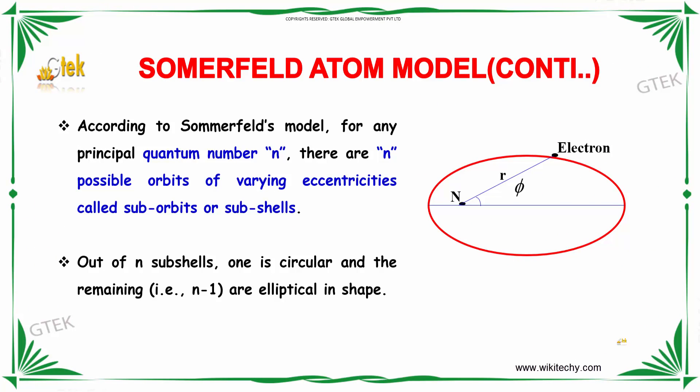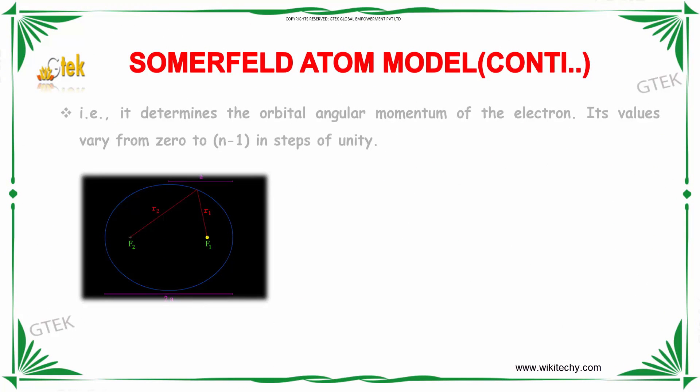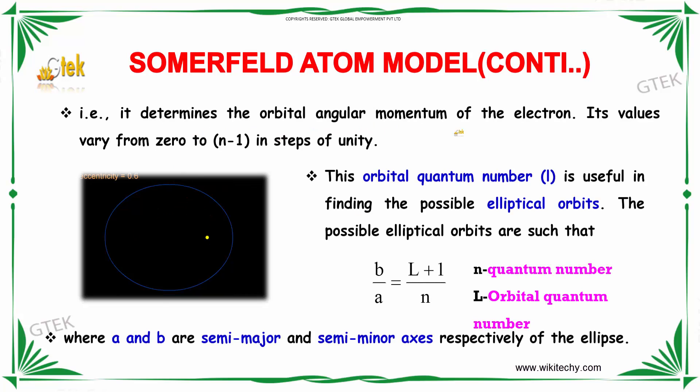According to Sommerfeld's model, for any principal quantum number n, there are n possible orbitals of varying eccentricities called subshells or suborbits. This orbital quantum number L is useful in finding the possible elliptical orbits, using the formula b/a = (L+1)/n.